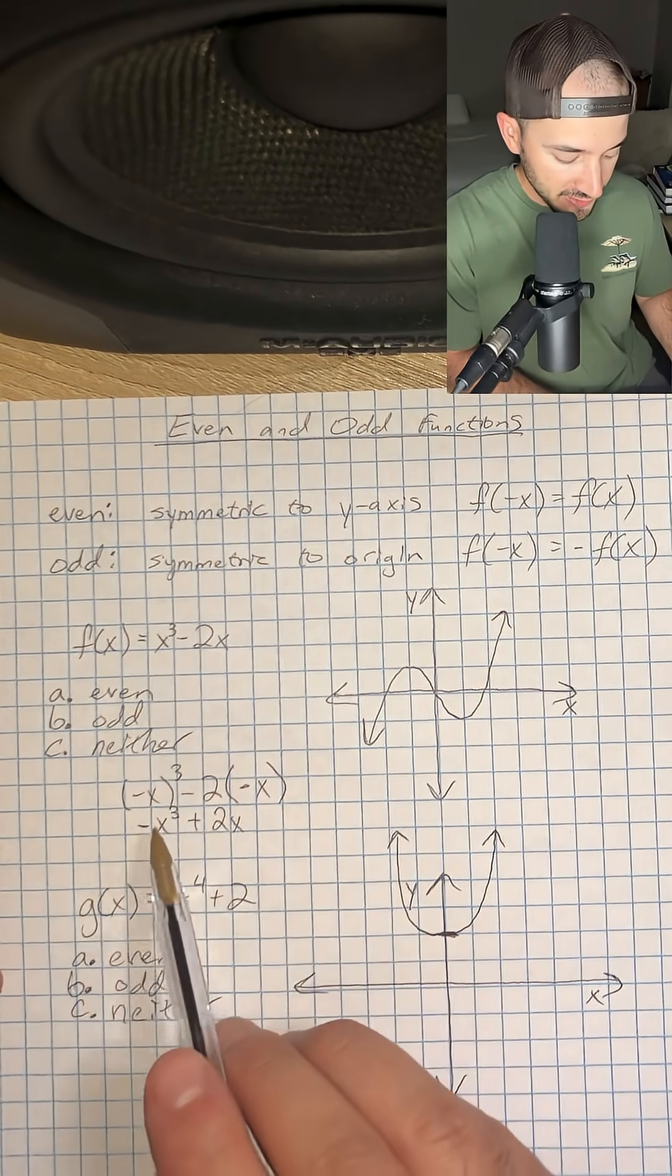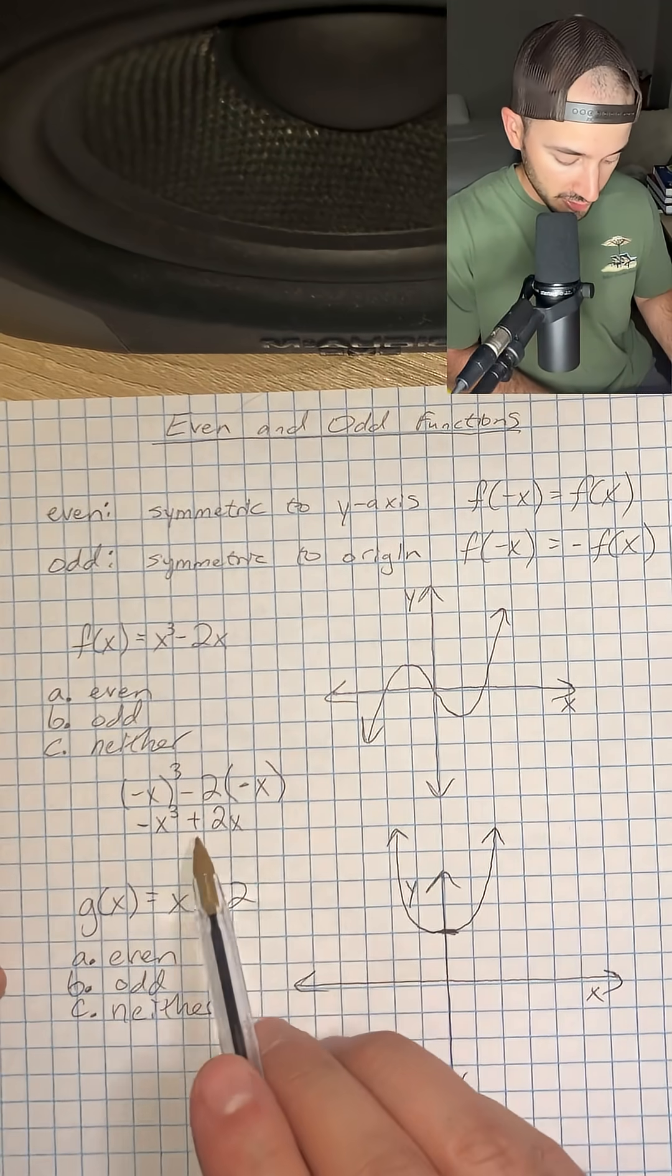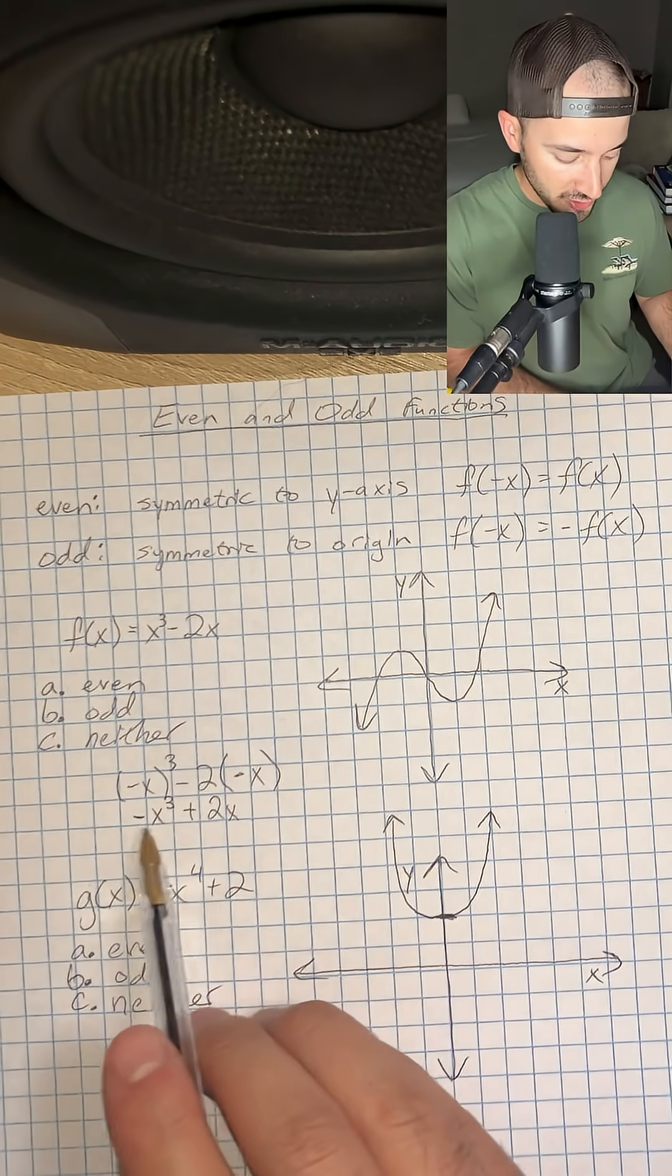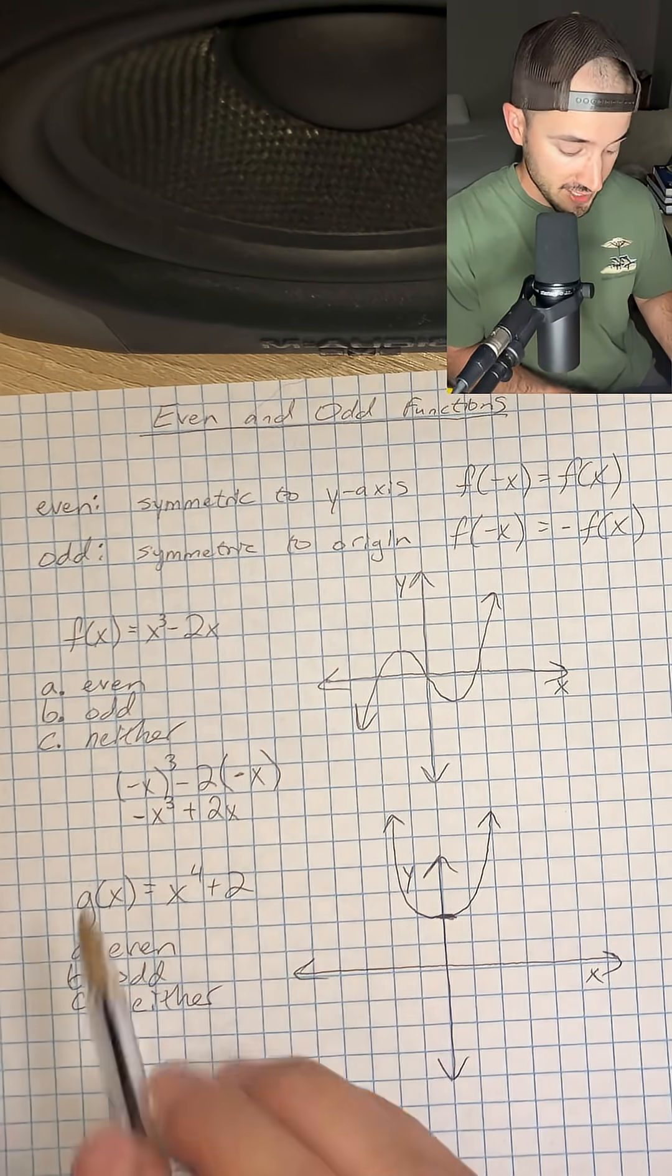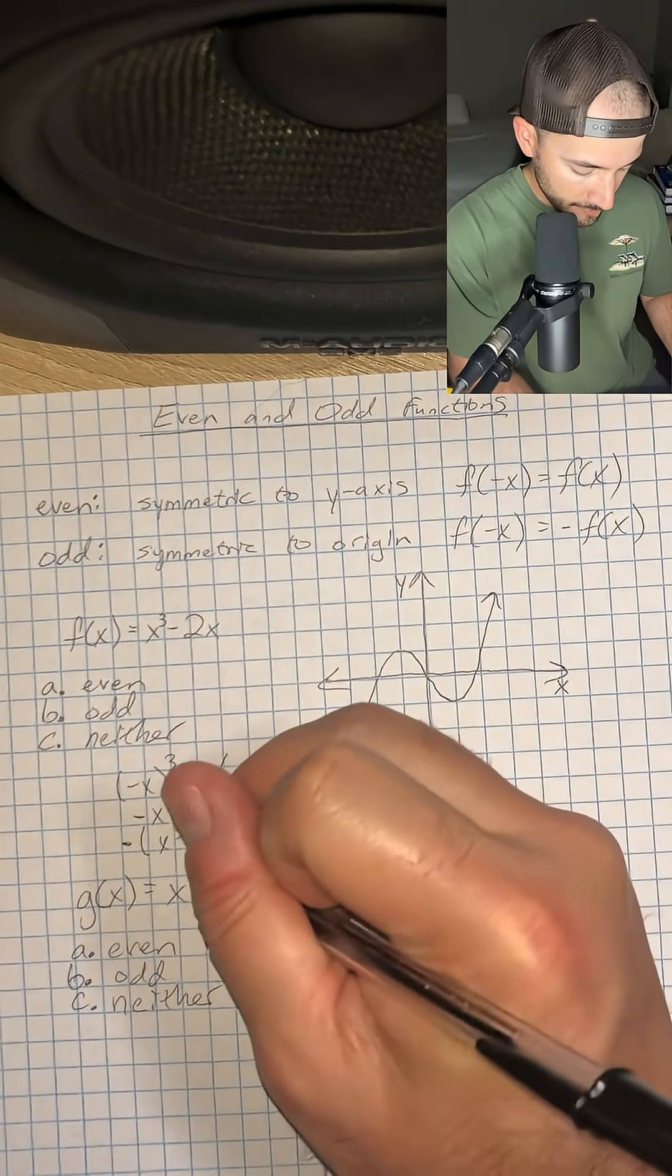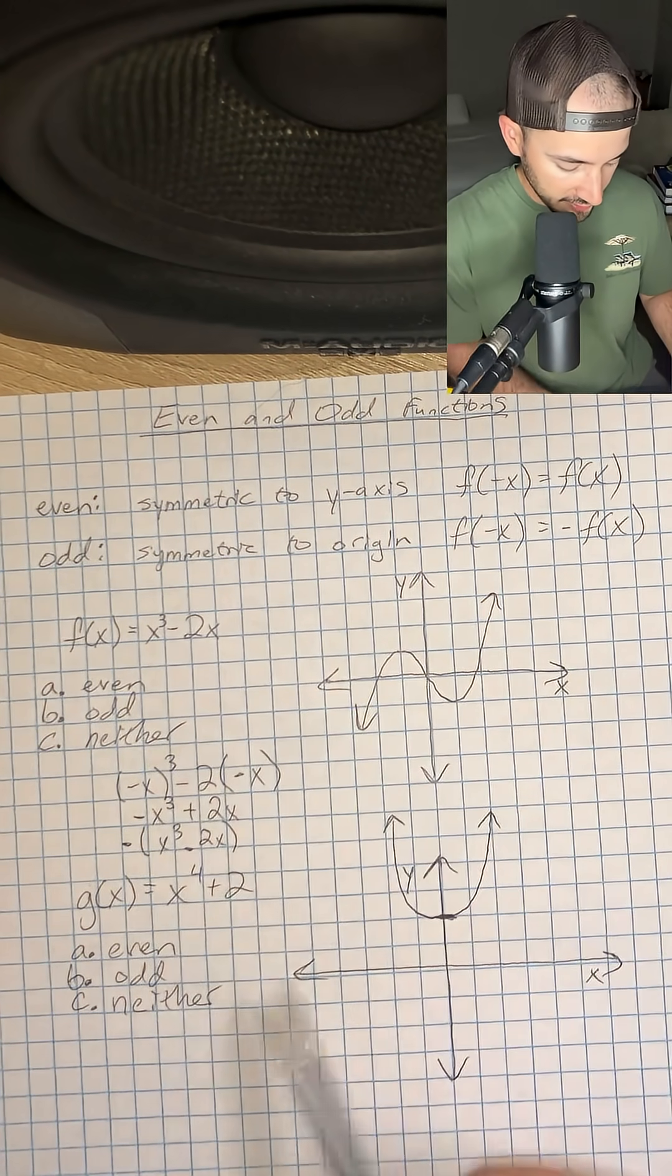x cubed was positive, now it's negative. Minus 2x became plus 2x. Another way to look at this is that we could factor out a negative sign from this whole function and make this negative x cubed minus 2x in parentheses.